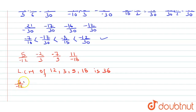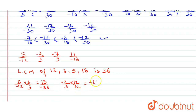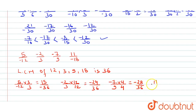Converting each fraction to denominator 36: 5/(-12) × 3/3 = 15/(-36). -2/3 × 12/12 = -24/36. -7/9 × 4/4 = -28/36. 11/(-18) × 2/2 = 22/(-36).